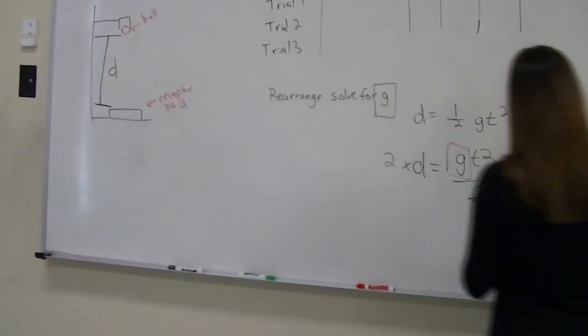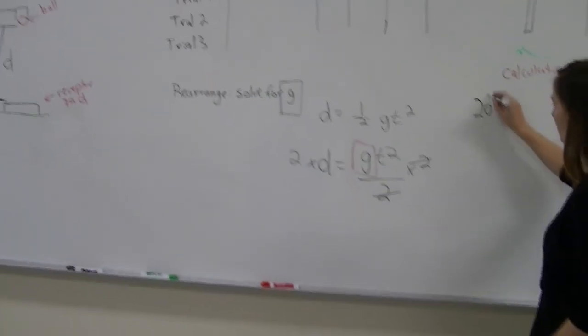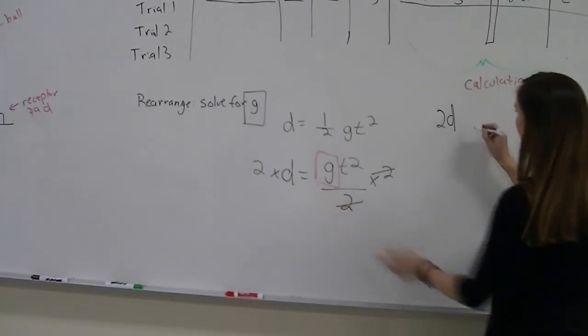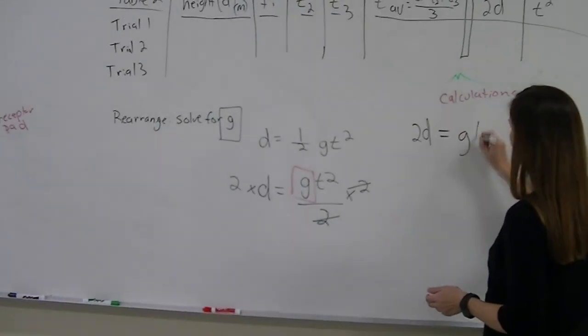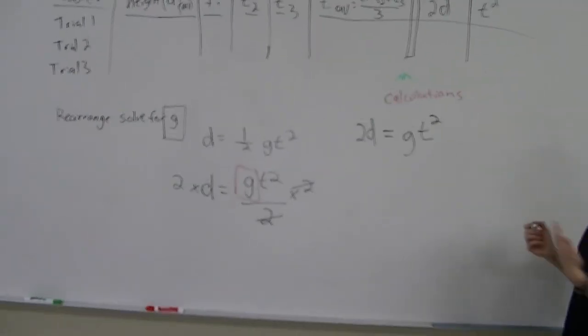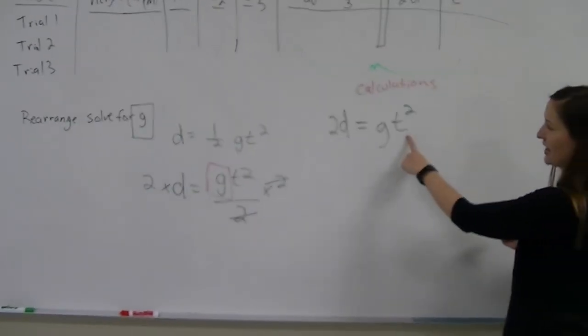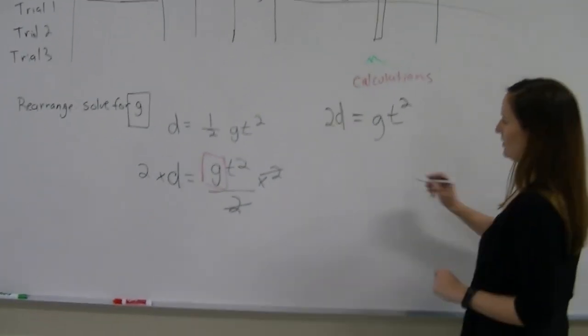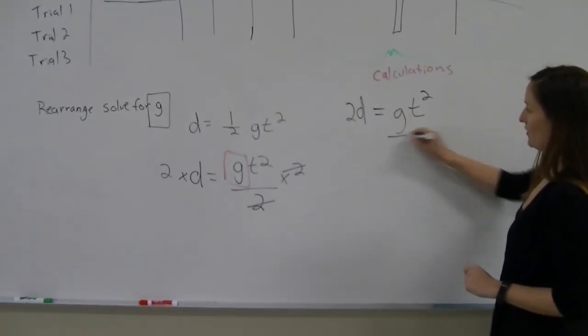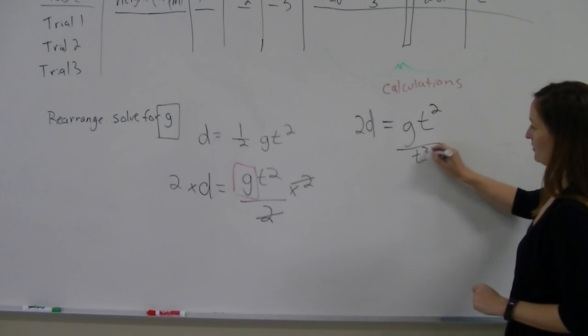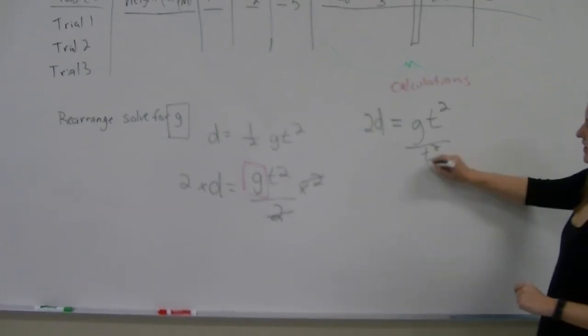Moving over here, what I have now is 2D on one side. On the other side of the equation, I have G times T squared. G is still not alone. I have to get rid of that T squared. So to do that, since it's in the numerator, I'm going to put it in the denominator, divide by T squared, so that it cancels.